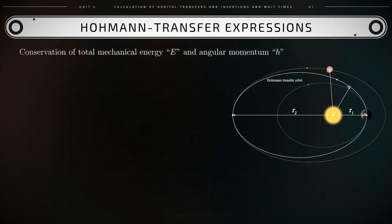This conservation principle produces the following expressions for points 1 and 2 on the transfer orbit. The first expression is the conservation of total mechanical energy: R1 squared times omega 1 squared over 2 minus GM over r1 equals r2 squared omega 2 squared over 2 minus GM over r2. The second one is r1 squared times omega 1 equals r2 squared times omega 2.